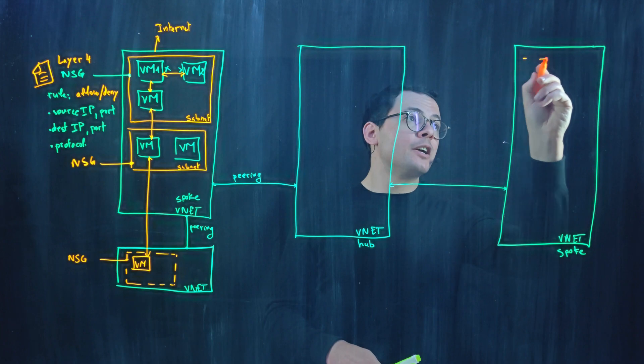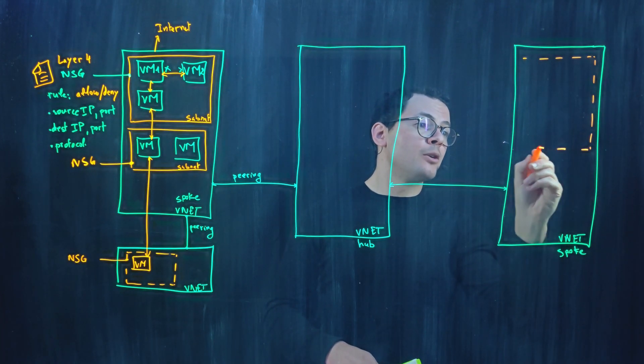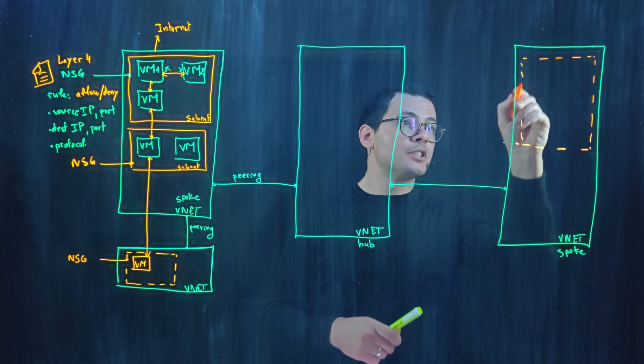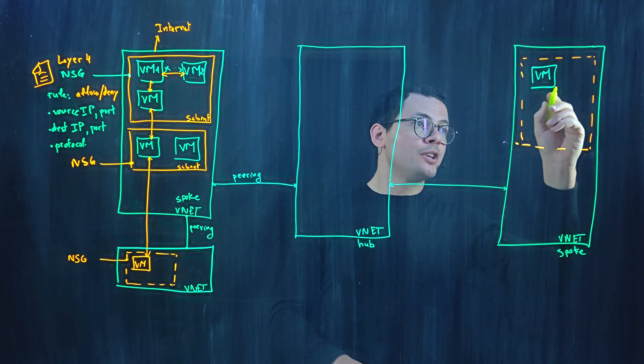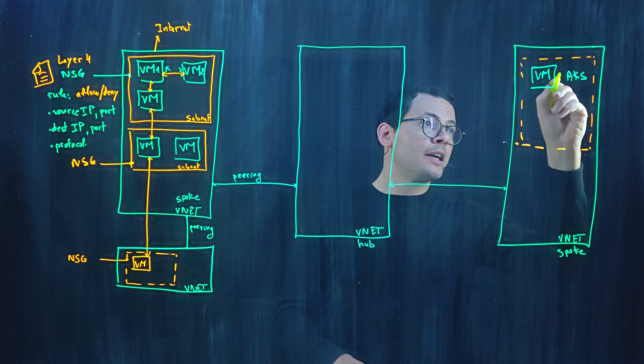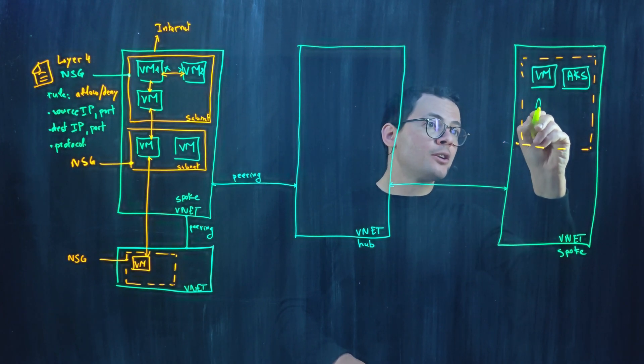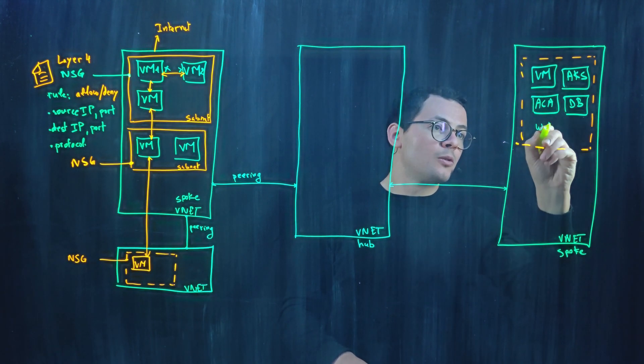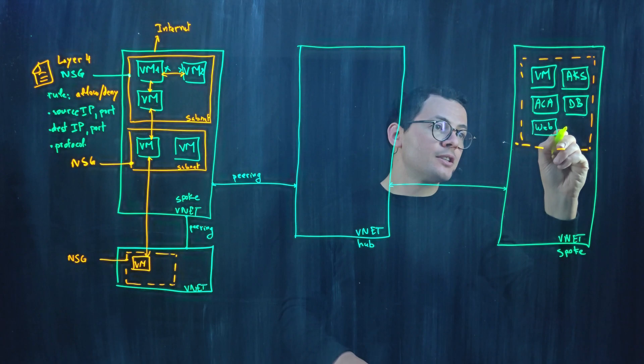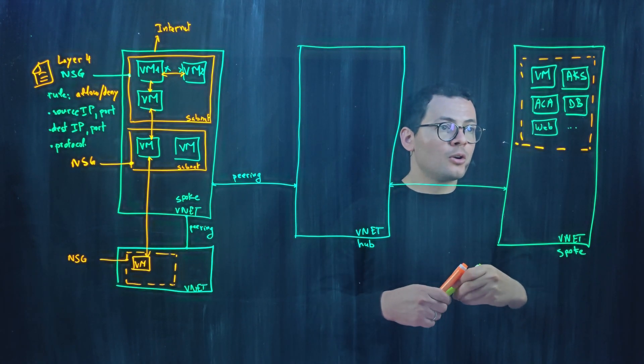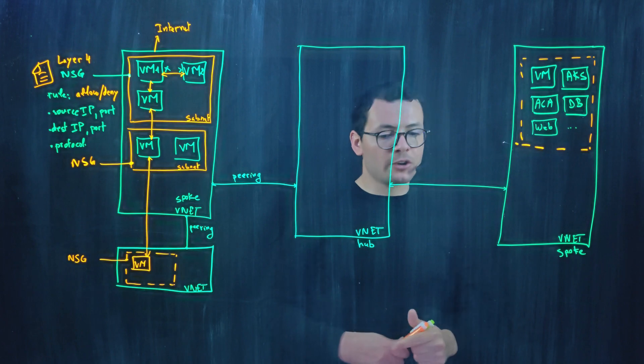Again, I might have another subnet right here where I have my workloads or virtual machines. I'm talking about virtual machines, but this could be any workload type like AKS, Azure container apps, databases, web apps, or Azure functions—any type of Azure workload that is attached to the virtual network.